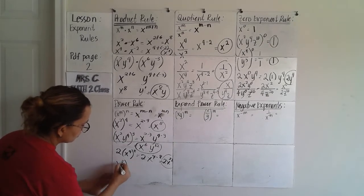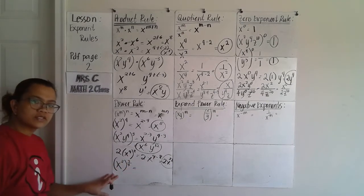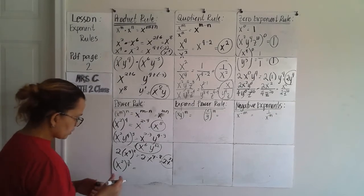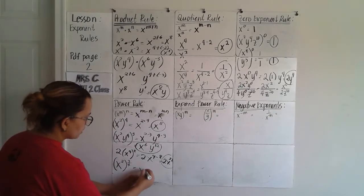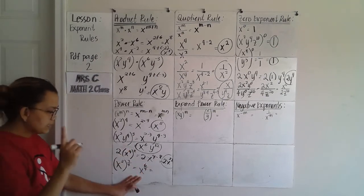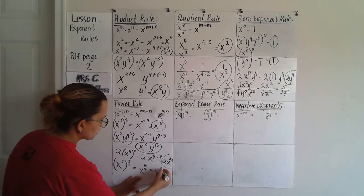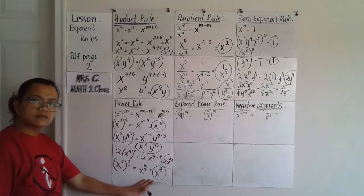Another example: x raised to 2, raised to 3 over 4. That's a rational exponent. Multiply numerator to numerator: x raised to 6 over 4. Simplify 6 over 4 — the final answer is x raised to 3 over 2.